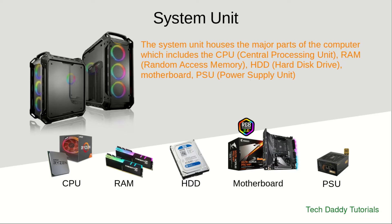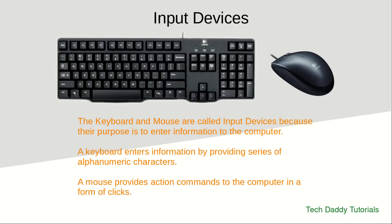Now for input devices, we have two basic components: the keyboard and mouse. They are called input devices because their purpose is to enter information to the computer. For example, a keyboard enters information by providing a series of alphanumeric characters — when you say alphanumeric, this consists of alphabet letters, numbers, and special characters that you enter as commands to the computer.